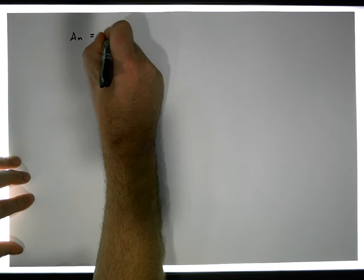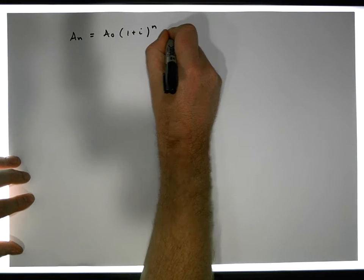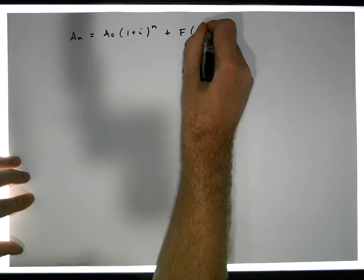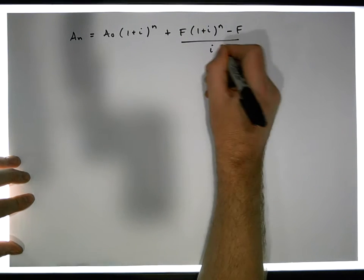An is equal to A0 times (1+i) raised to the power of n, plus F times (1+i) raised to the power of n minus F, all over i.